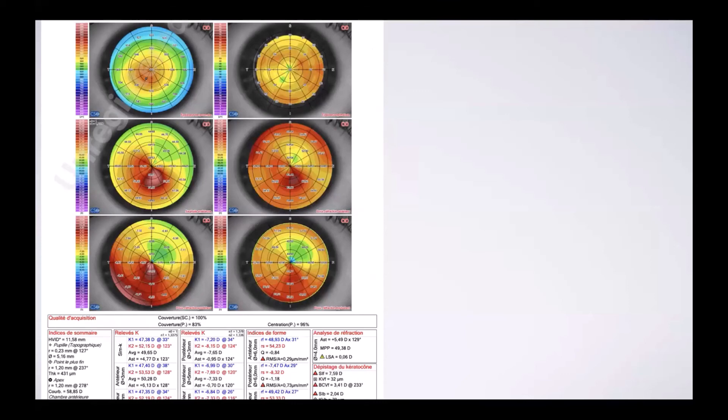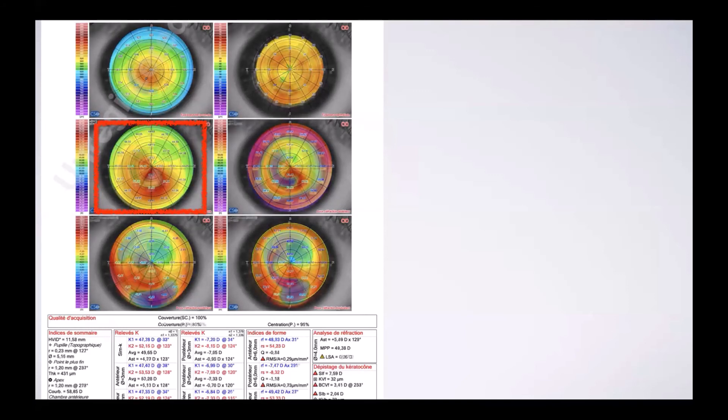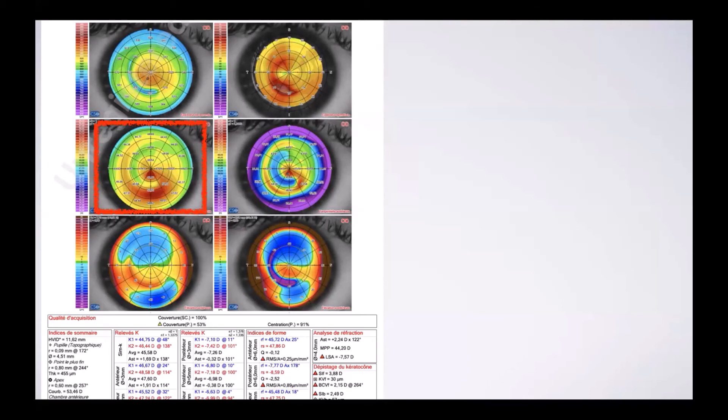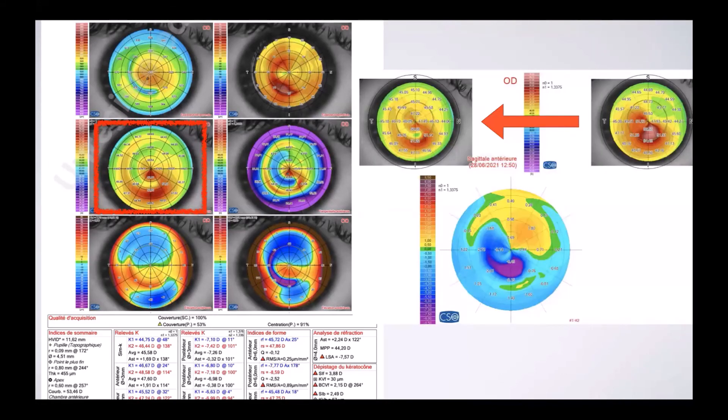These are all the examples with the intracorneal ring segment AGL Pro, the latest version. Look at this part of the cornea before and four months after. This is with the new OCT topographer and look at the differential map — a very clear effect of this kind of intracorneal ring segment.